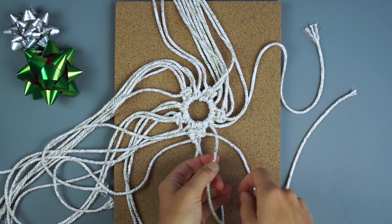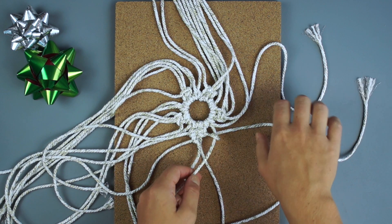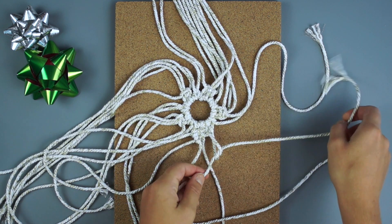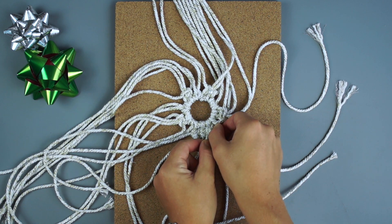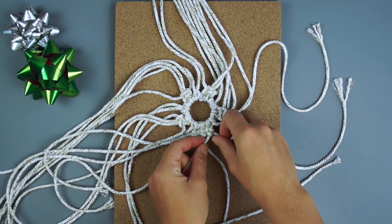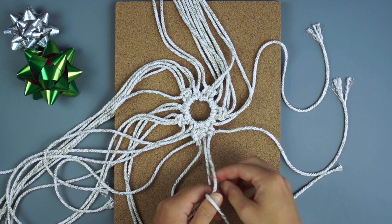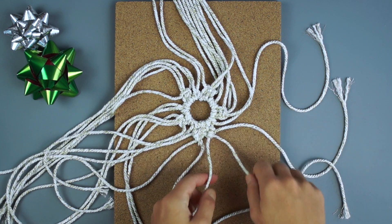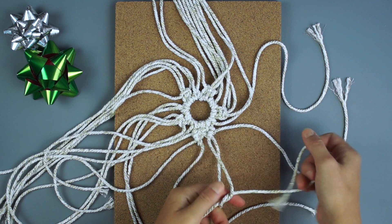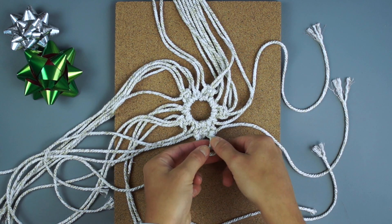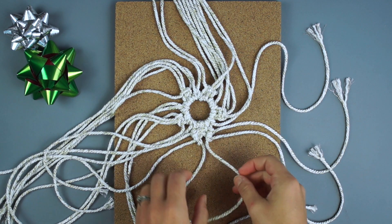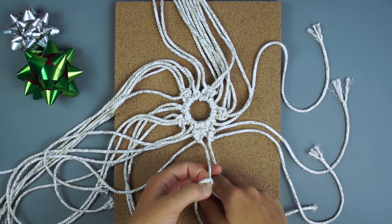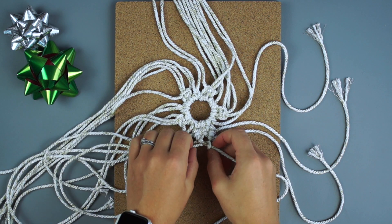Repeat that same process on the right side of your square knot. Tie a final double half hitch knot with the 2 filler cords to connect the 2 sides.